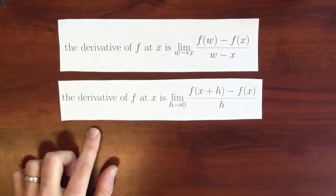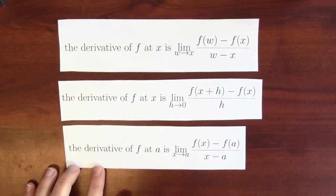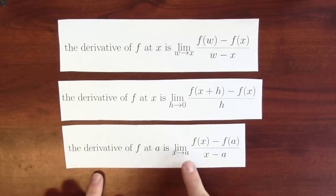The other thing that makes these definitions sometimes a little bit tricky is that people will give you a definition that's not at the point x. For instance, here is a definition of the derivative of f at the point a. It's the limit of f(x) minus f(a) over x minus a as x approaches a.